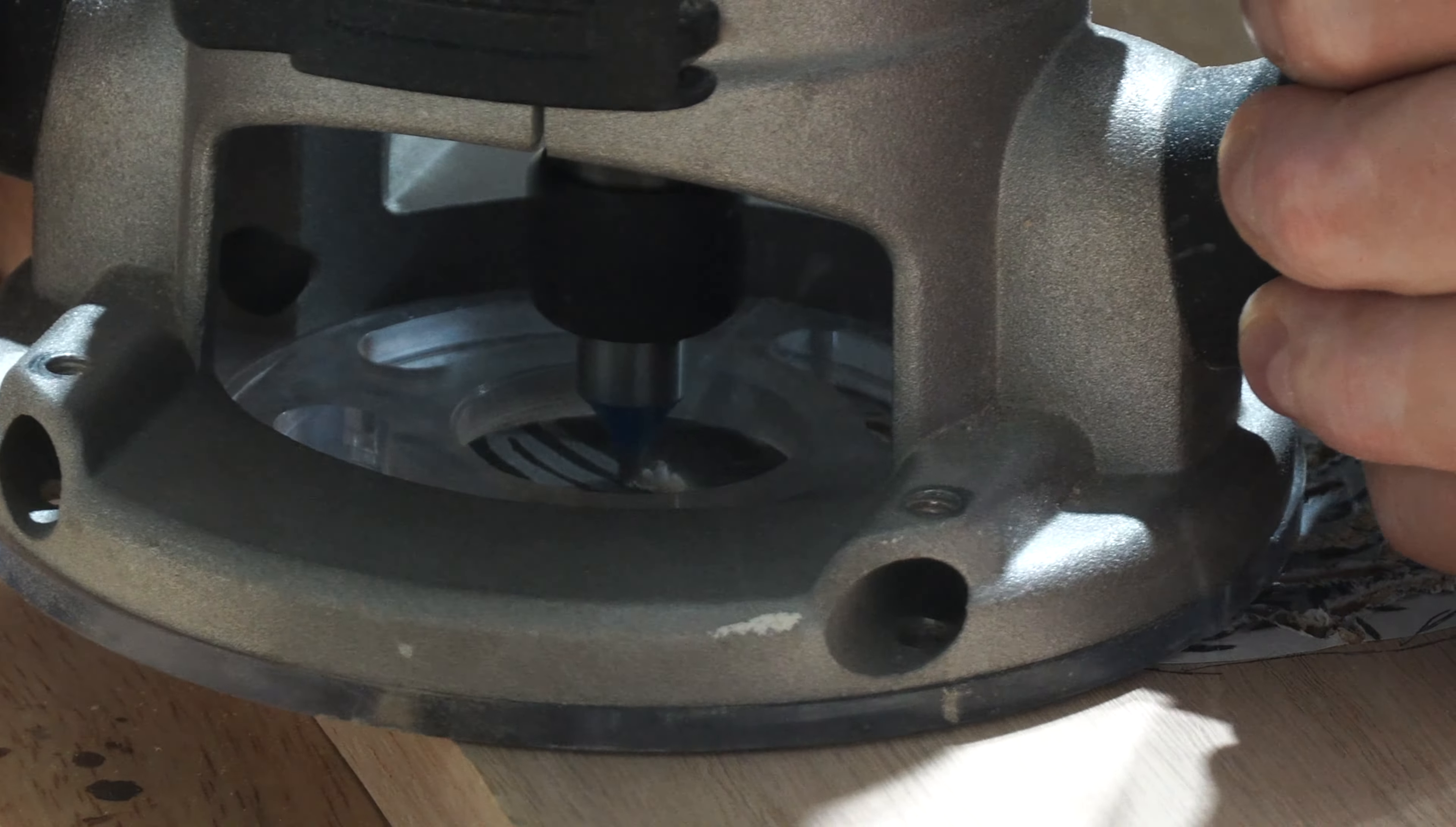Next I used a heat gun to make sure the epoxy would expand and fill all the grooves. Then I threw on another layer of epoxy and went over it with the heat gun one more time. I gave it two days to dry and then started sanding it again.